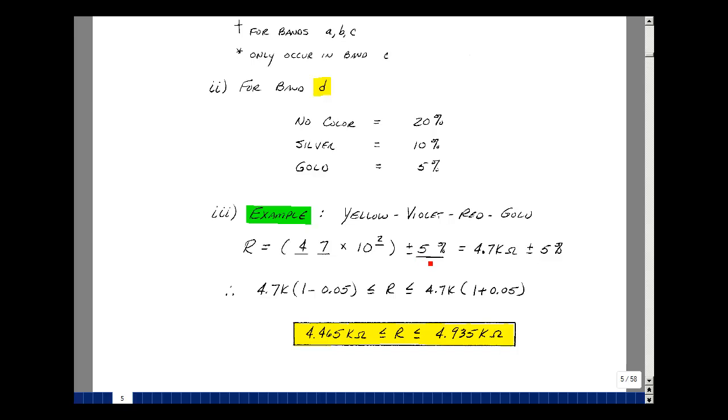And gold is 5%. So what that means is that I have a resistance of 47 times 10 to the 2, putting that in engineering notation, that would be 4.7k ohms, and a 5% tolerance.